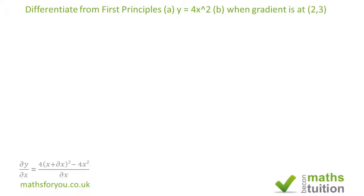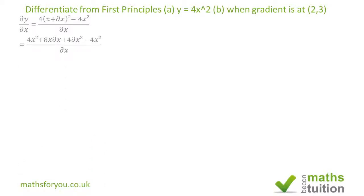If the value of X increases by a small amount Delta X, then Delta Y divided by Delta X is 4 times (X plus Delta X) all squared minus 4x squared, divided by Delta X. So we end up with 4x squared plus 8x Delta X plus 4 Delta X squared minus 4x squared, all divided by Delta X.